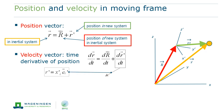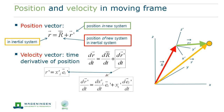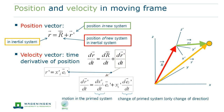Recall that a vector is the product of the components in the given reference frame and the unit vectors of that reference frame. Hence, the change of the position of the dot in the new reference frame depends both on its velocity in the new reference frame — that's the first term — and on the rate of change of the unit vectors, the second term.